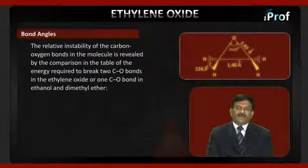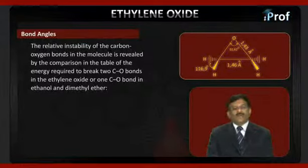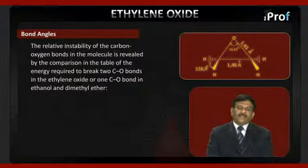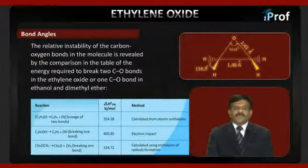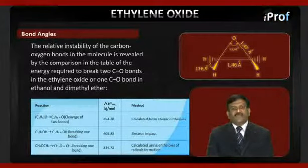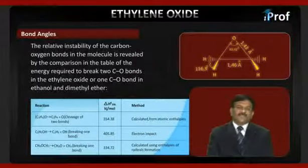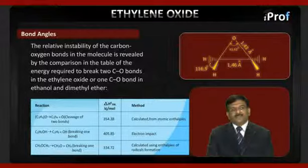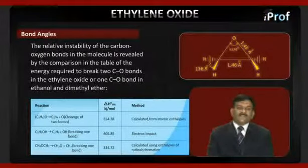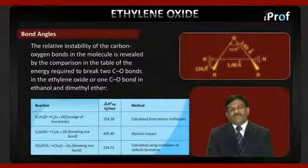The relative instability of the carbon–oxygen bonds is revealed by comparing the energy required to break the two C–O bonds in ethylene oxide versus one C–O bond in ethanol or dimethyl ether. For ethylene oxide (C2H4O), cleavage of two bonds gives ΔH = 354.38 kJ/mol, calculated from atomic enthalpies. For ethanol (C2H5OH), breaking one C–O bond requires 405.85 kJ/mol, measured by electron impact. For dimethyl ether (C3H8O), breaking one bond requires 334.72 kJ/mol, calculated using enthalpies of radical formation.